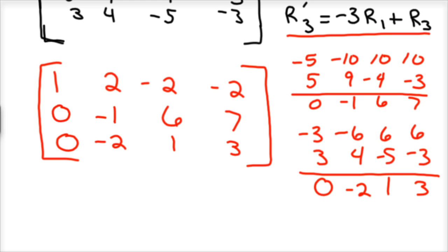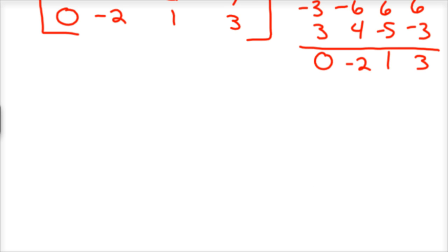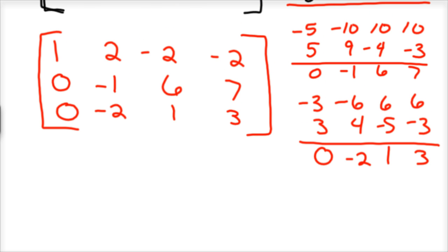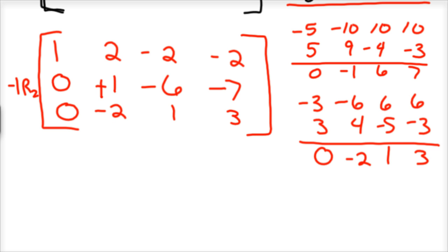What's nice is we've got the second row pretty much where we want it. So if I just take negative 1 times row 2, I'd have positive 1, negative 6, negative 7. So that one's in the form we need. The last thing left to do is make this a zero so that we can end up with a one here. So we'll take 2 times row 2 and add that to row 3 to get our new row 3.